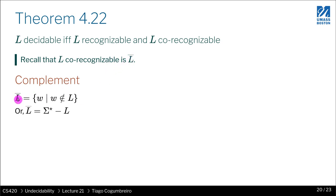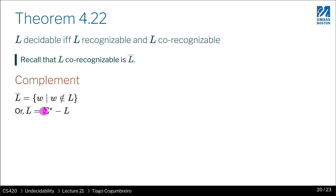The complement of a language is all the words that are not in the language. You can describe it simply as all the words not in L, but you could also think of it as: sigma star is all possible words, and from sigma star you remove L — you remove all the words that are in L from sigma star, and you get L-bar, the complement of L.